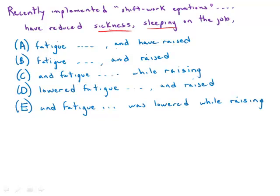But the problem is 'and have raised production efficiency' — this takes the sentence in a new direction. The things that were in parallel were the things that were reduced, so once we talk about things that are raised, that's a new direction and we have to have some kind of contrast word. We can't just put that in parallel with everything else. That is actually the problem with both A and B — there is no 'and' in front of 'fatigue.'